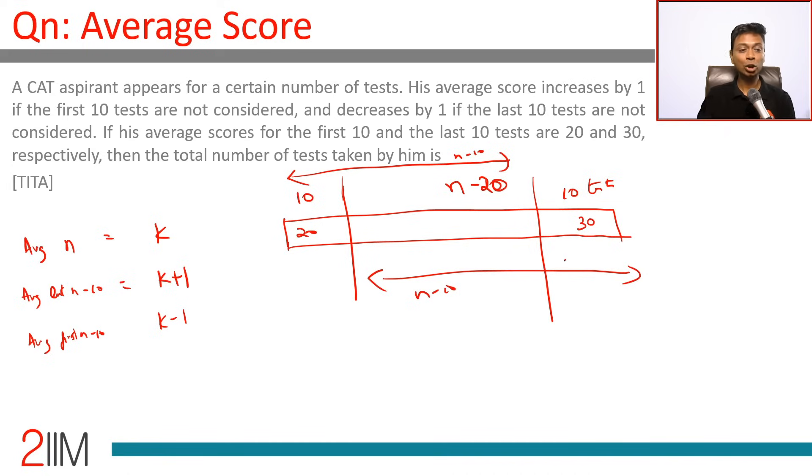Super. Total number of marks should be k into n. Total number of marks in the system is k into n. So from this kn, if I subtract 200, this becomes k plus 1 into n minus 10.